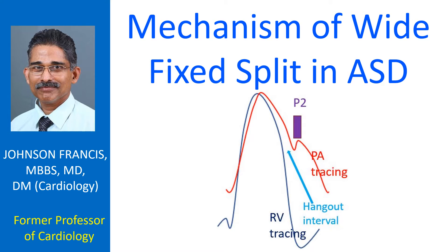The pulmonary component of the second heart sound does not move with respiration in atrial septal defect because the right ventricular output and pulmonary hangout interval do not change with respiration. The pulmonary hangout interval does not change because the pulmonary circulation is already overloaded by the left-to-right shunt.